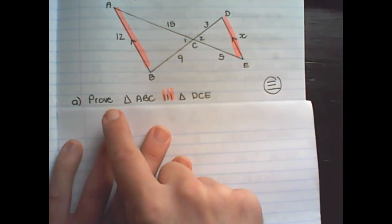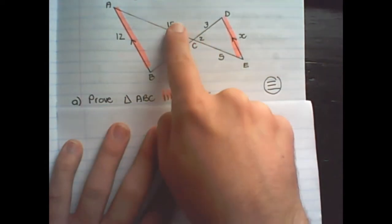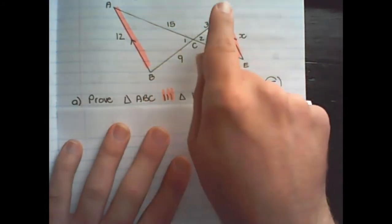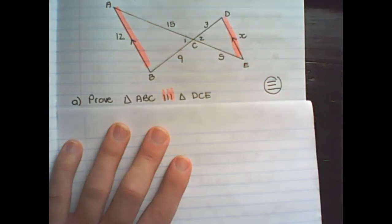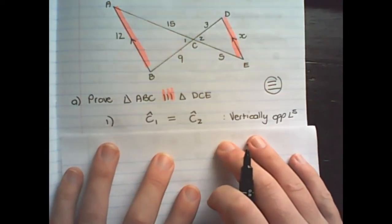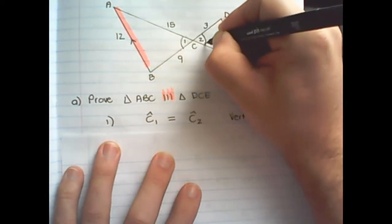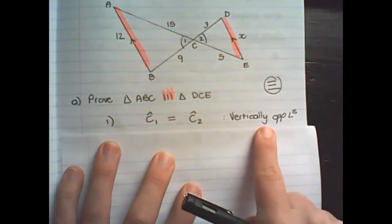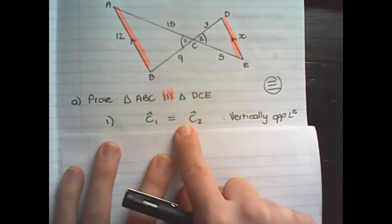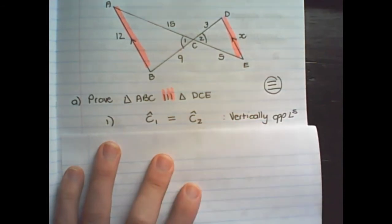If I want to prove these two triangles similar, I must either prove that ratios are equal, or I can prove all of the angles equal. So let us start with our first statement. I can say that angle C1 is equal to angle C2 because they are vertically opposite angles. Remember in geometry we need to state a reason why a statement is true.